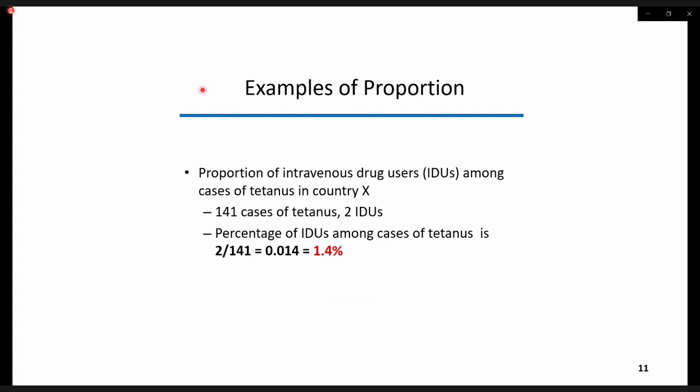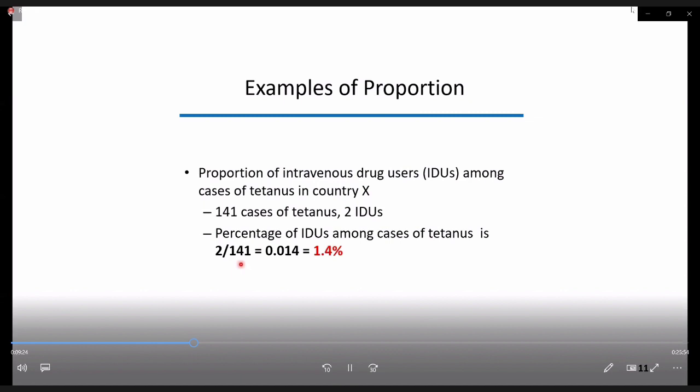Another example of a proportion is the number of intravenous drug users among 141 cases of tetanus during an outbreak of tetanus in country X. The proportion of tetanus cases that are IV drug users is 2 out of 141, which corresponds to 0.014, or 1.4% if expressed as a percentage.